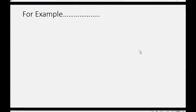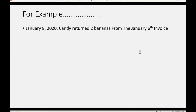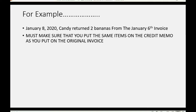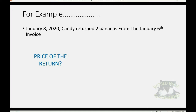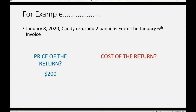For example, on January 8th Candy returned two bananas from the January 6th invoice. You must make sure that you put the same items on the credit memo that you put on the original invoice. We sell bananas for $100 each, so $200 would be the amount of income we are reversing. We pay $20 for each banana, so the amount that reverses in cost of goods sold as well as inventory would be $40.